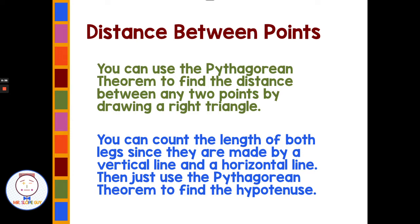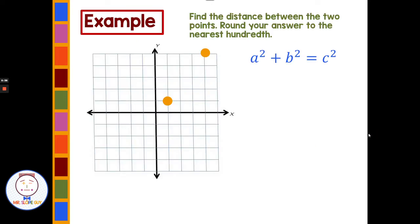Let's look at a few examples. We're given two points on a coordinate plane and asked to find the distance between them, rounded to the nearest hundredth. What we're going to do is draw a line connecting the two points, and also draw a right triangle with a vertical line and a horizontal line. We're finding this distance between the two points, and by drawing that right triangle, we can actually count the distance along the vertical or horizontal line.